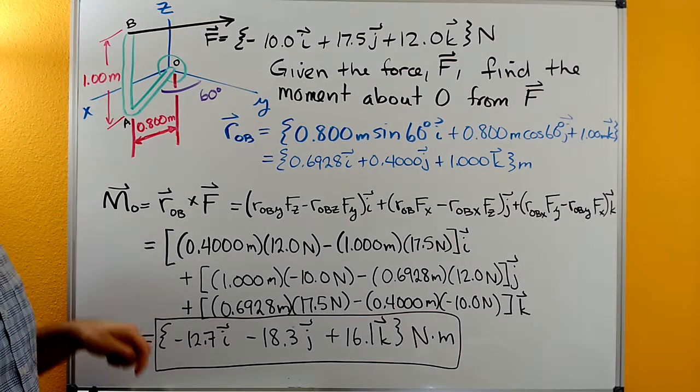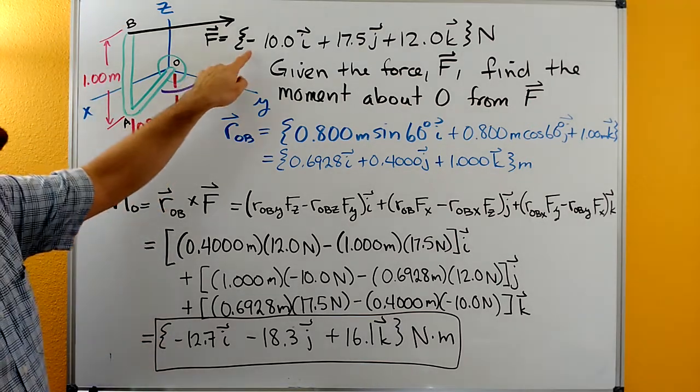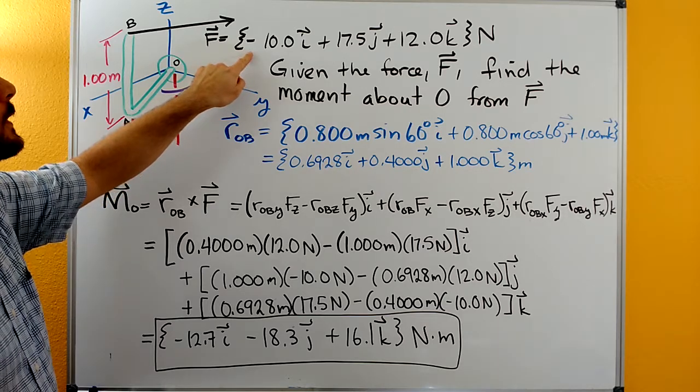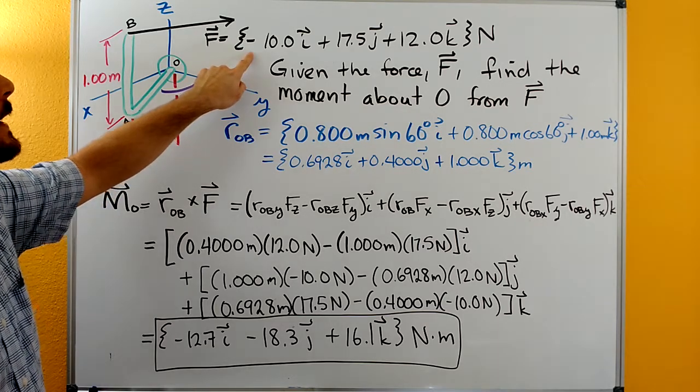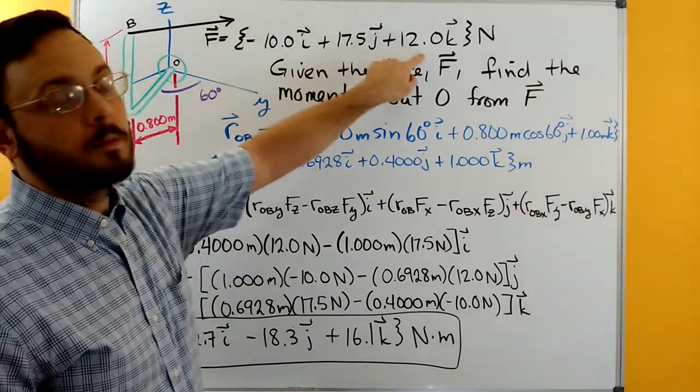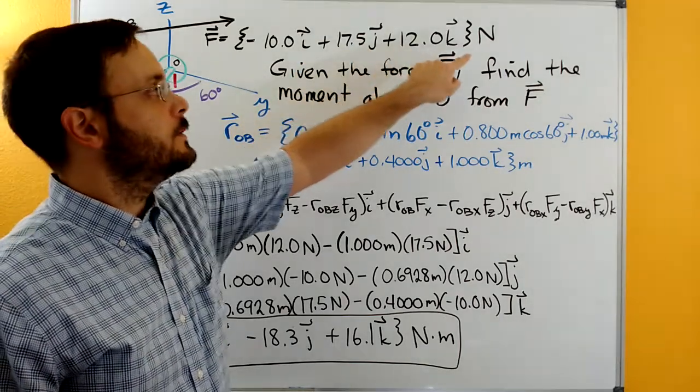The pipe goes straight up then 1.0 meters and then it has a force acting on it that's given and the force is negative 10i plus 17.5j plus 12k newtons.